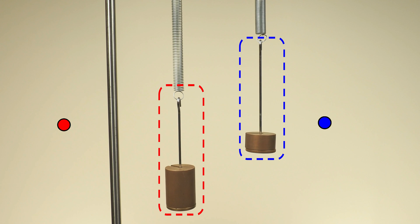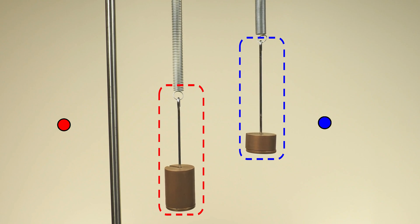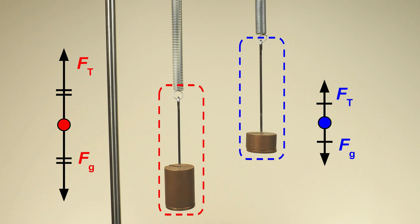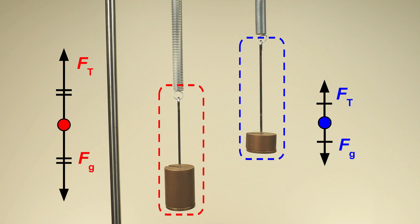Remind them to carefully choose the length of each included force arrow to indicate if any of the forces are larger than the others or if two forces are the same size. Most students will draw a tension force pointing up that is the same size as the gravitational force for each of the hanging objects. Several students will also draw the gravitational force and tension force larger for the object whose supporting spring stretched the farthest.